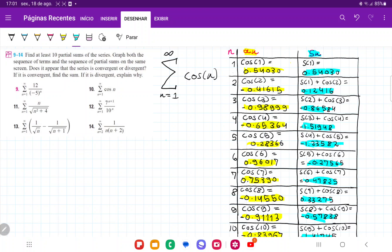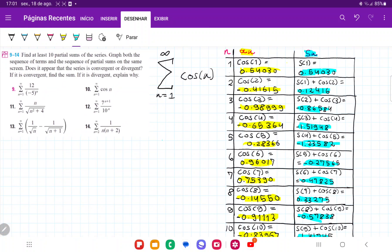And then for the fourth one, it's cosine of 4, plus s3, and then cosine of 5, plus all the previous terms, and so on. And so for the sn, we're just summing up all our an's, all our cosine of 1, cosine of 2, cosine of 3, we're summing that from 1 to 10.